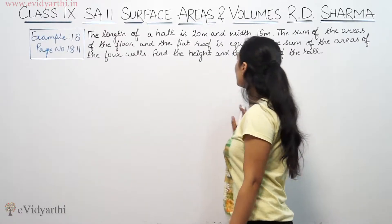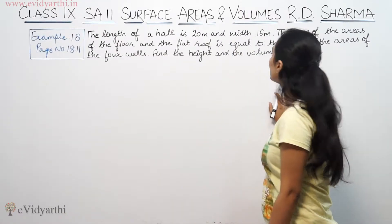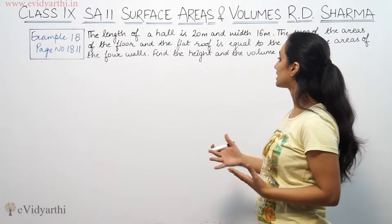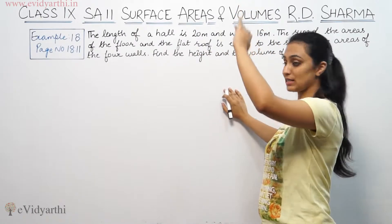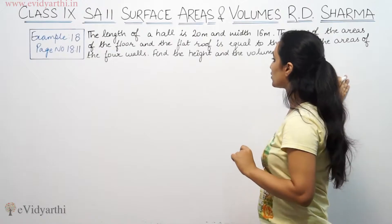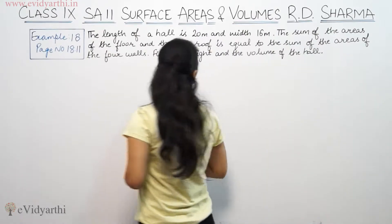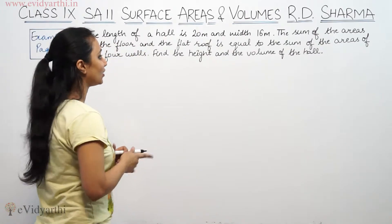It says the length of a hall is 20 meters and width is 16. The sum of areas of the floor and flat roof is equal to sum of area of 4 walls. Find the height and volume of the hall.